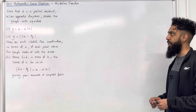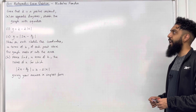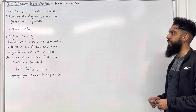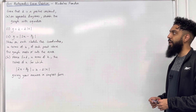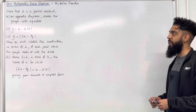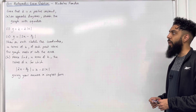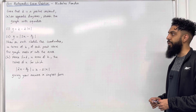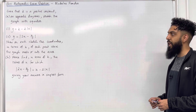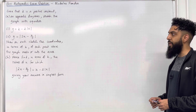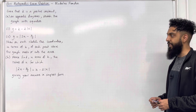Here is the exam question. Given that k is a positive constant, part A: on separate diagrams, sketch the graph with equation — part 1: y = k − 2|x|; part 2: y = |2x − k/3|. Showing on each sketch the coordinates in terms of k of each point where the graph meets or cuts the axes.